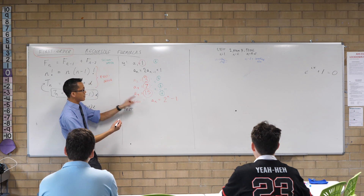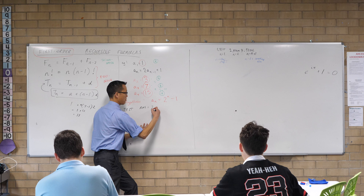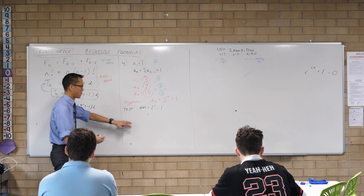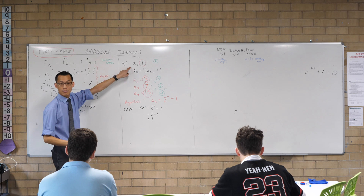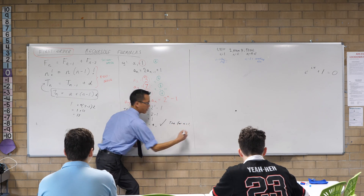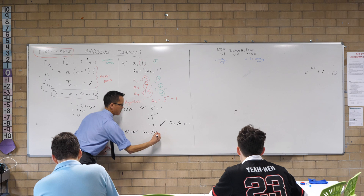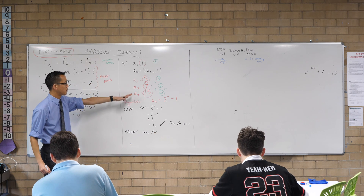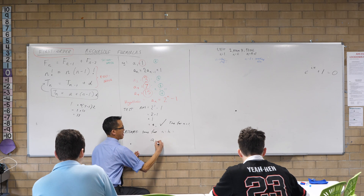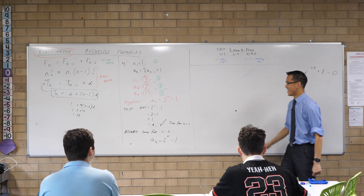So let's go ahead with the test. For n equals 1, the right-hand side equals 2 to the power of 1 take away 1, which is 2 minus 1 equals 1. That is indeed a1, so we can say true for n equals 1. Now let's assume true for n equals k, which gives us a_k equals 2^k minus 1.